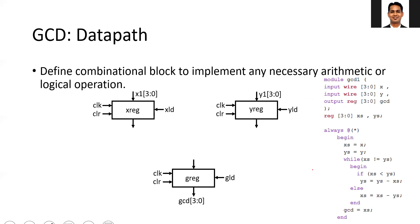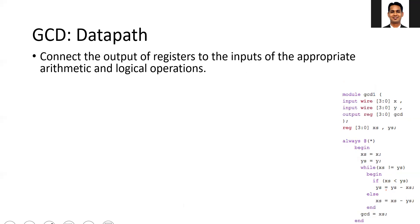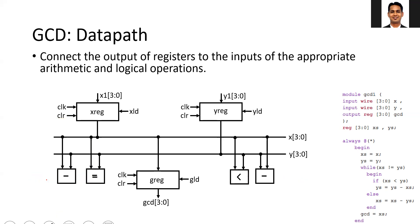You need to find out what arithmetic and logical operations are happening in your algorithm. For example, here I am doing a comparison of two numbers — checking whether one number is less than another — and then doing a subtraction operation. I need to identify all the arithmetic and logical operations. Then I connect the output of the registers used for the inputs to the appropriate arithmetic and logical operations. For example, I am going to compare whether x is less than or equal to y, compare whether x is not equal to y, subtract x minus y, and subtract y minus x.